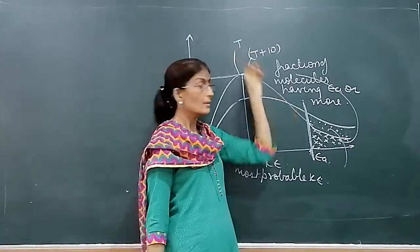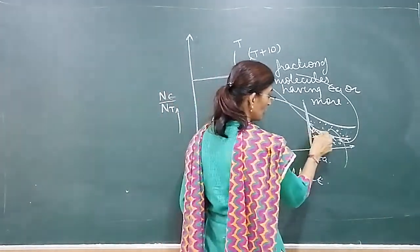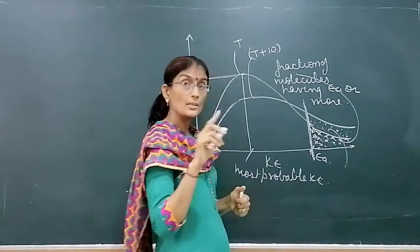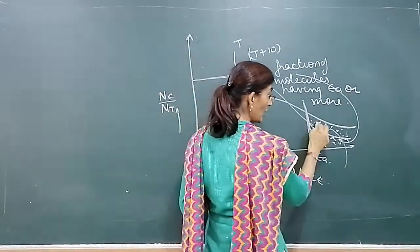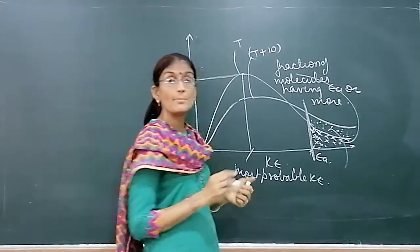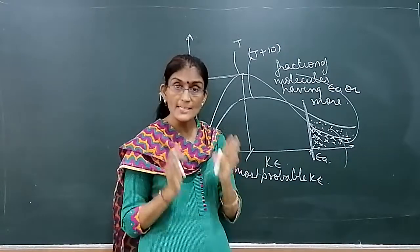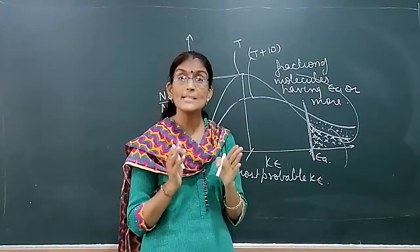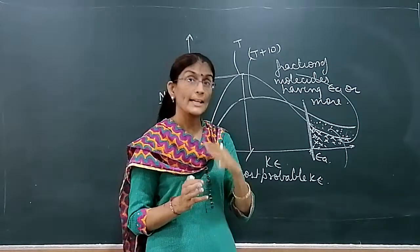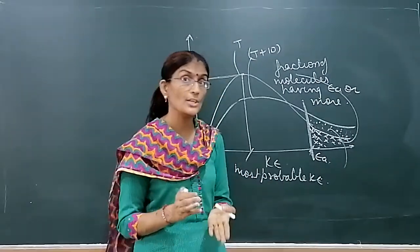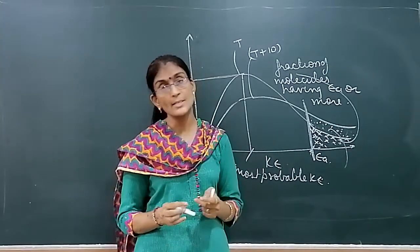At temperature T, the area under this curve is this much only - that represents the fraction of molecules having energy more than activation energy. If we increase the temperature, the area under the curve corresponding to molecules having activation energy will become double. And that's why the rate of reaction becomes double.